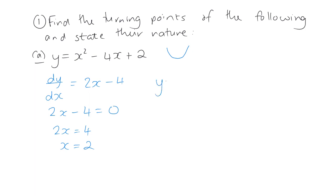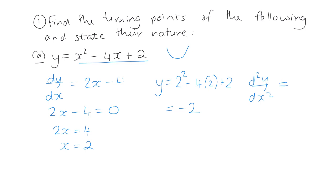For turning points, set that equal to 0, so x equals 2. Once we've got the x value, we need to get the y value — put it into our equation: 2 squared minus 4 times 2 plus 2, and we get y equals minus 2. Then we need to know the nature, so d²y/dx² — differentiating dy/dx — we get 2. That's greater than 0, therefore it is a minimum as we thought. So the coordinates are (2, −2) and that is a minimum.